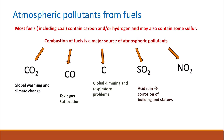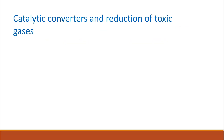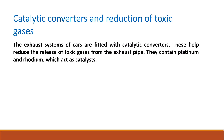Nitrogen oxides, including nitrogen dioxide, are among the pollutants that come from combustion of fuel. Because of the very high temperatures within car engines during combustion, nitrogen and oxygen from air combine to give different nitrogen oxides. These nitrogen oxides are also responsible for acid rain, which causes corrosion of buildings and statues.